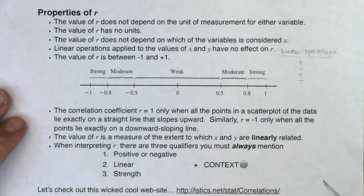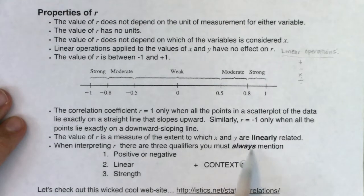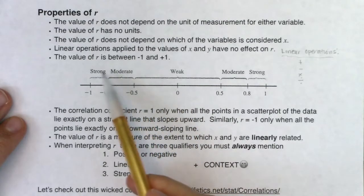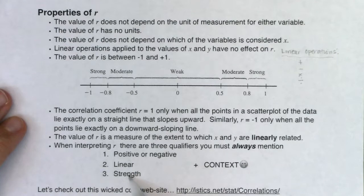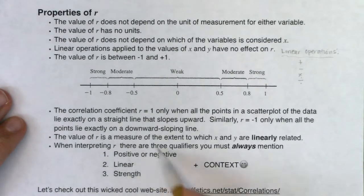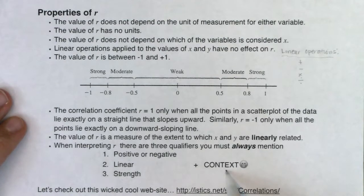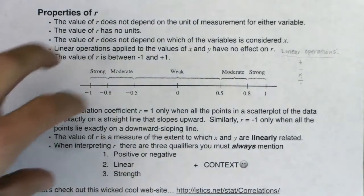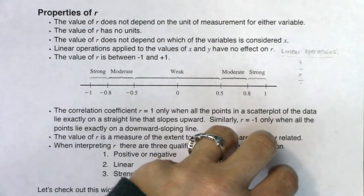There will be four numbers you need to interpret in this chapter, and R is the first. When interpreting R, there are three qualifiers you must always mention: tell me whether R is positive or negative, always use the word linear, and tell me how strong it is — your options are weak, moderate, or strong. Then I want context: mention your two numerical variables. I don't care what order you put the three adjectives in, but I want to see all three of them plus context.